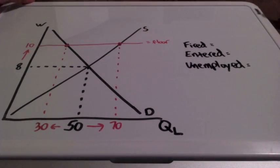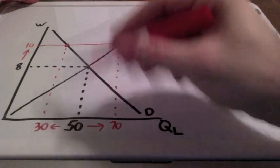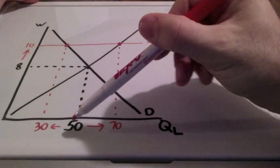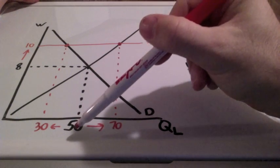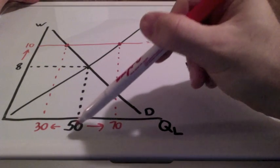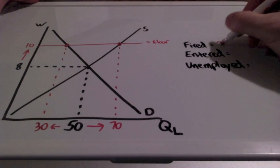So what will happen in this particular market to the number of workers that would be fired? Well, the quantity demanded of workers is 30, the equilibrium quantity is 50. So the number of workers that would be fired would be 50 minus 30 equals 20.